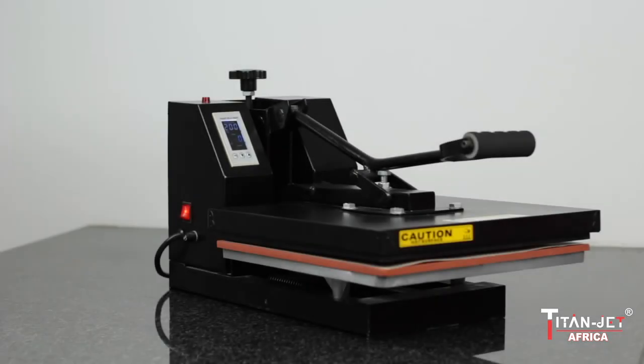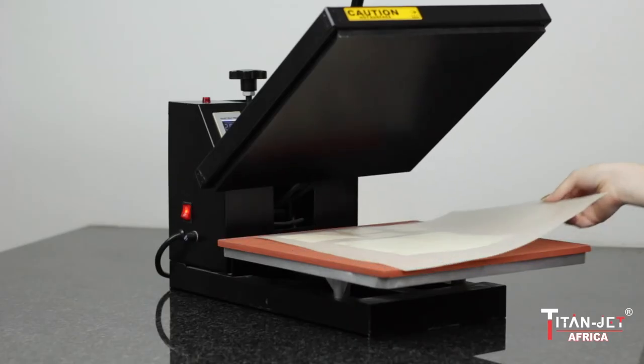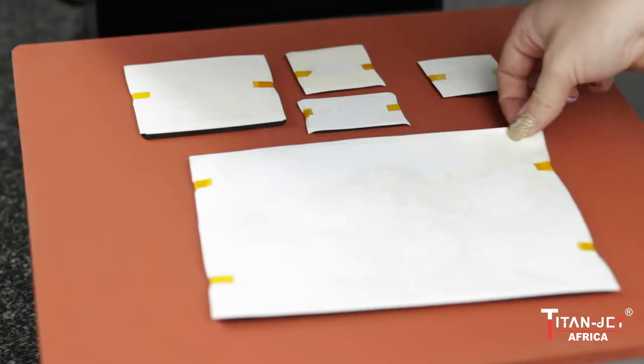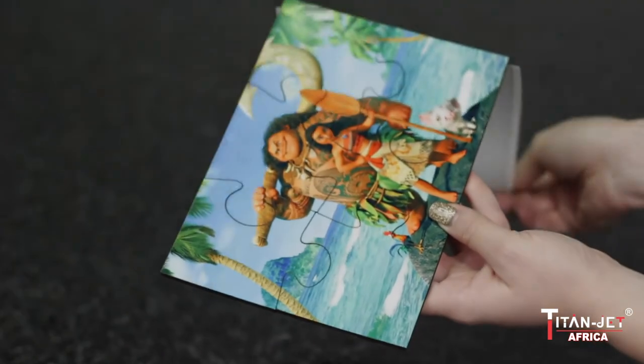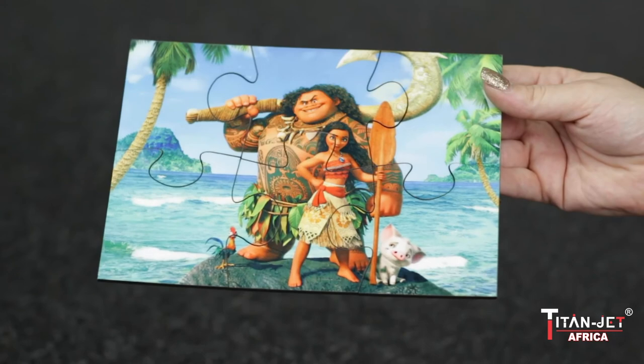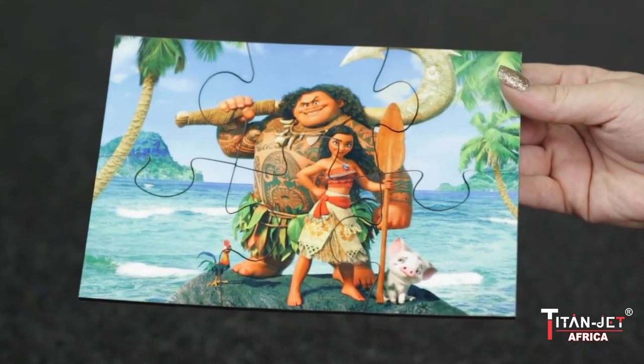When the buzzer goes off, remove the items from the heat press and cold peel the paper from the MDF wood. Perfect. Now you are ready to sublimate more MDF wood.